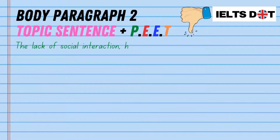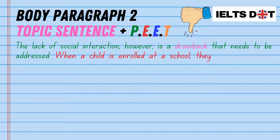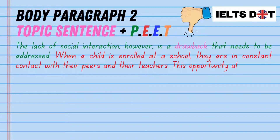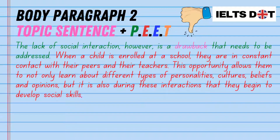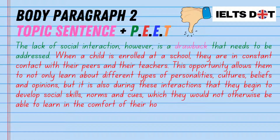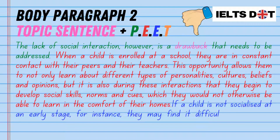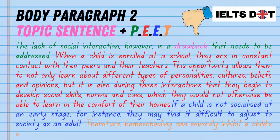Here's the example of the first body paragraph: 'One of the main benefits of homeschooling is its flexibility. If a school child is struggling with a challenging subject or a specific topic, for example, the parent can focus on this area of weakness until the child has completely mastered it. In mainstream schools, however, this flexibility is not available as the teacher is forced to plow through the curriculum despite any straggling students. Likewise, if a child masters a particular concept, there's no need for extra classes devoted to the subject, and the parent can instead move on to the next topic. Thus, homeschooling can go as slow or as fast as is required and can be custom-designed for a child's specific needs.' Now let's move on to the second body paragraph, which focuses on the first disadvantage of homeschooling, following the same paragraph structure of a topic sentence plus P, E, E, and T. 'The lack of social interaction, however, is a drawback that needs to be addressed. When a child is enrolled at a school, they are in constant contact with their peers and their teachers. This opportunity allows them to not only learn about different types of personalities, cultures, beliefs, and opinions, but it is also during these interactions that they begin to develop social skills, norms, and cues, which they would not otherwise be able to learn in the comfort of their homes. If a child is not socialized at an early stage, for instance, they may find it difficult to adjust to society as an adult. Therefore, homeschooling can severely inhibit a child's overall social development.'